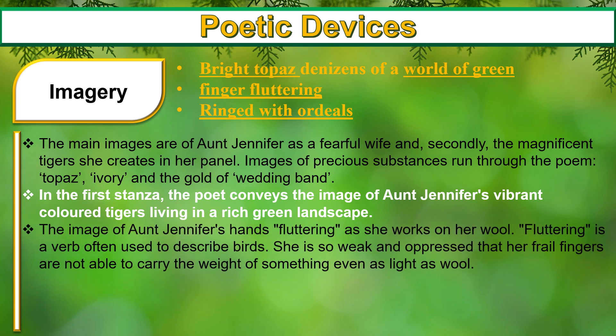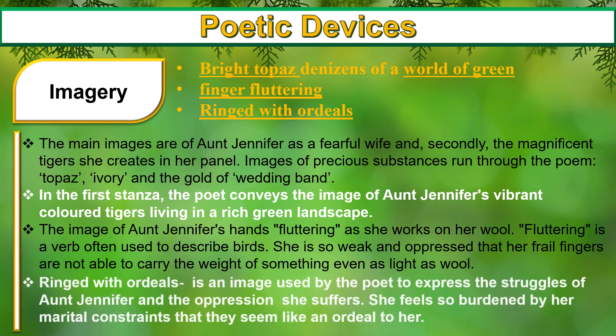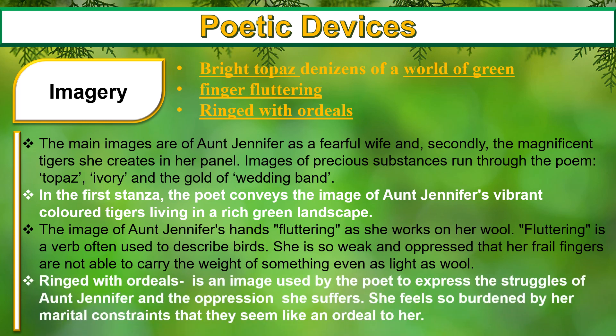In the second stanza, the image of Aunt Jennifer's hands fluttering as she works on her wool is presented. Fluttering is a verb often used to describe birds. She is so weak and oppressed that her frail fingers are not able to carry the weight of something as light as wool. 'Ringed with ordeals' is an image used by the poet to express the struggles of Aunt Jennifer and the oppression she suffers — she feels so burdened by her marital constraints that they seem like an ordeal.